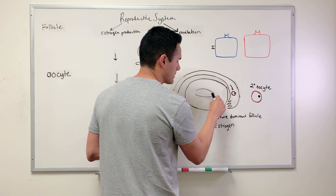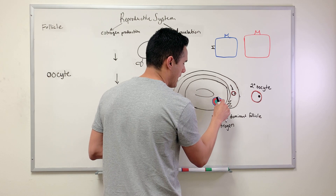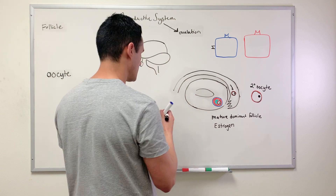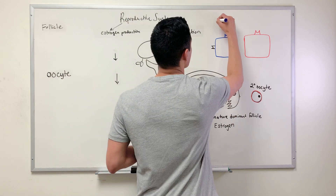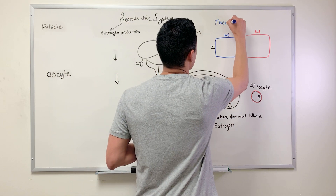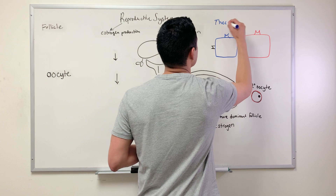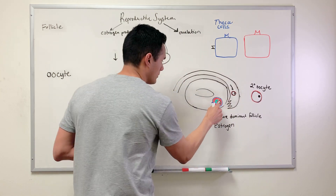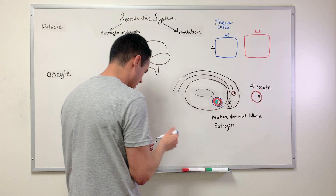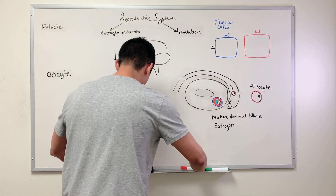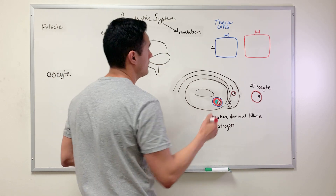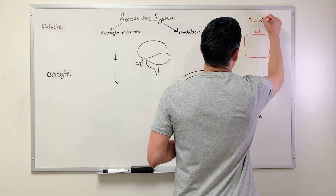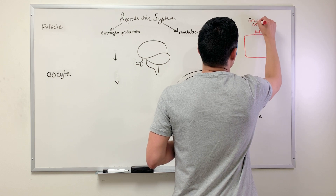This layer shown here in blue is known as the theca cells, and what's drawn here in red are the granular cells.